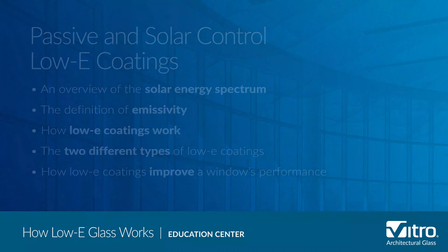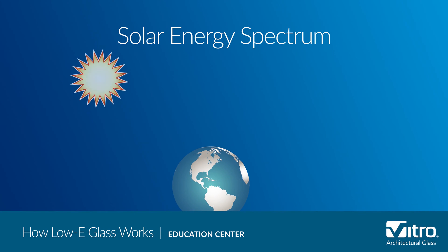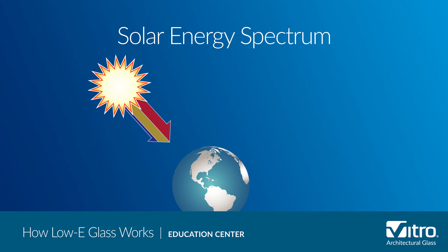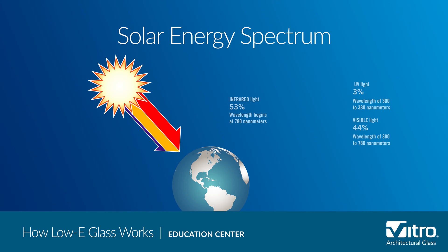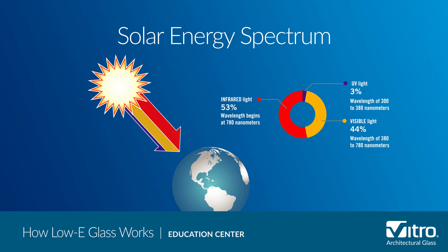Let's begin with a brief overview of the sun's energy spectrum. Ultraviolet light, visible light, and infrared light all occupy different parts of the solar spectrum, and the differences between the three are determined by their wavelengths.